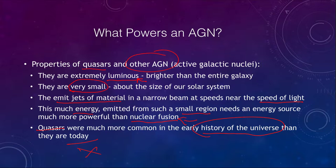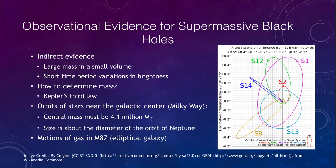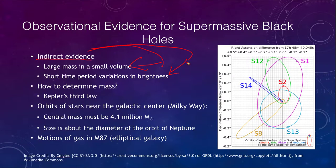Let's look for some observational evidence for these supermassive black holes. Do they really exist? We have some indirect evidence: first, a large mass in a small volume — what else can it be? And we have very short time-period variations in brightness, meaning that the source has to be very small. Both of these are indirect evidence for a supermassive black hole.